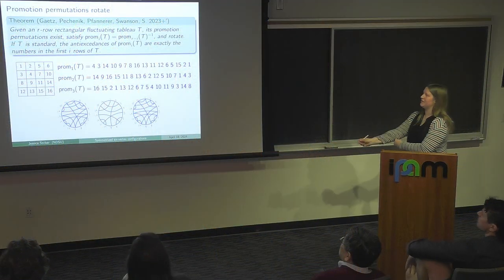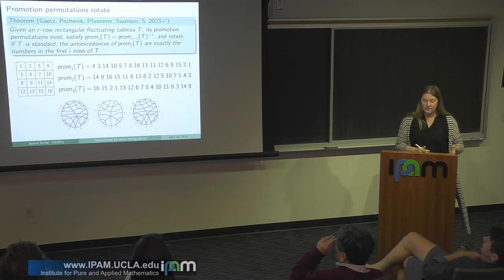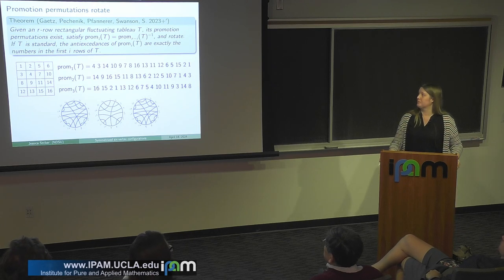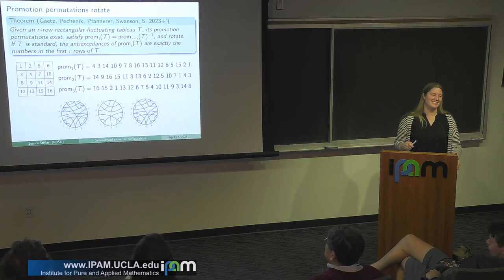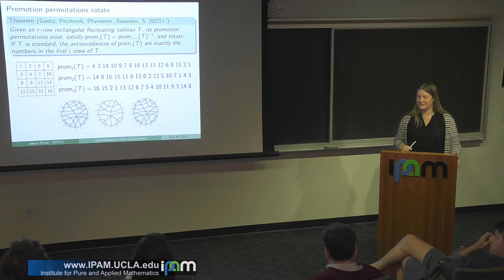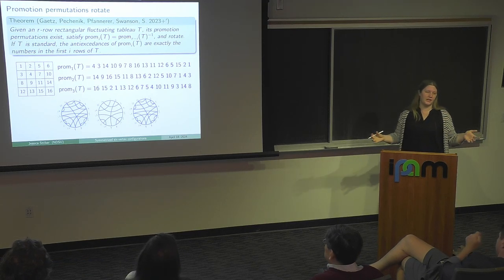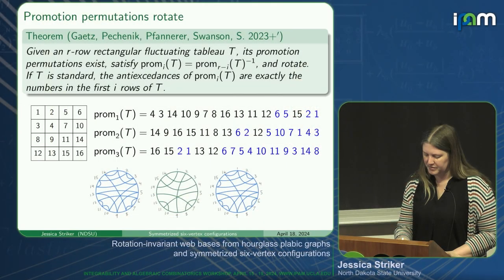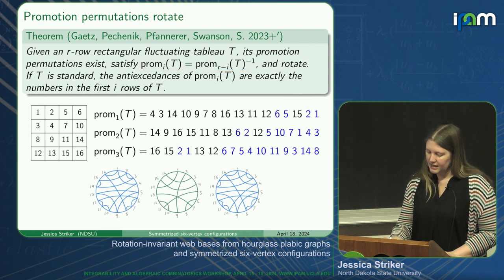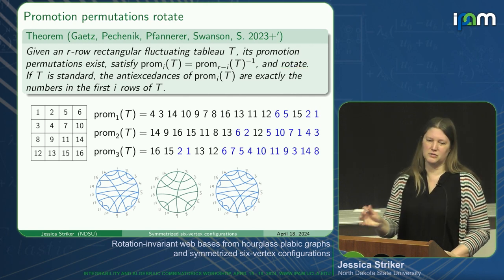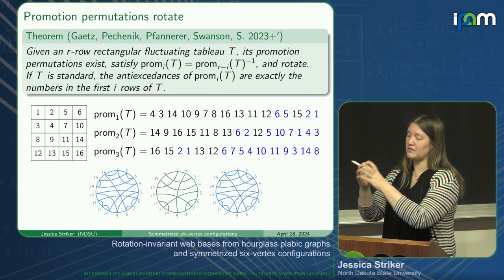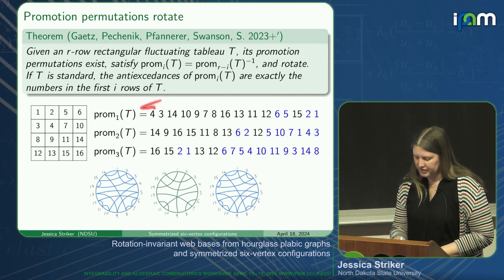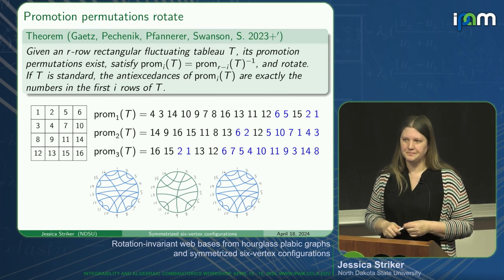Here's the theorem about these objects, and it's true not only in the standard case but in the fluctuating case. If the tableau is rectangular, these promotion permutations exist and are indeed permutations. We can define more general things for non-rectangular tableau, but they don't turn out to be permutations—rectangularity is precisely when you get permutations. Promotion permutations one and R minus one are inverses of each other, and these promotion permutations rotate by construction: if you do one step of promotion and then look at the promotion permutations of the result, you'll have just rotated these permutations around.